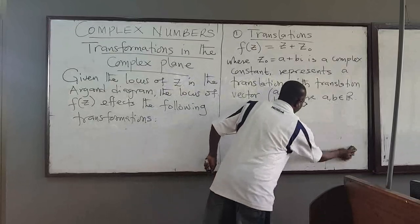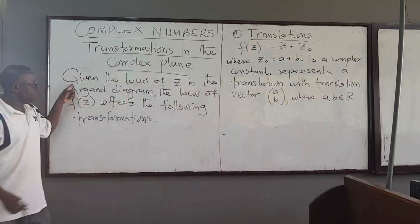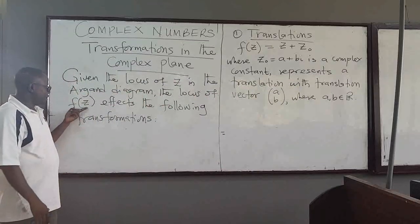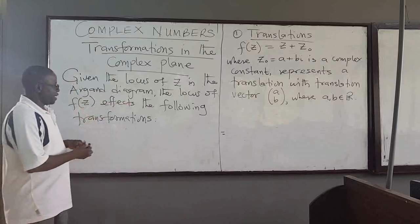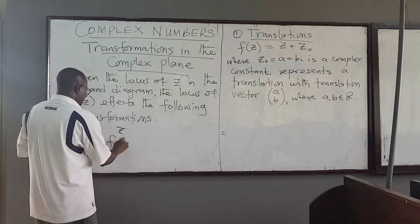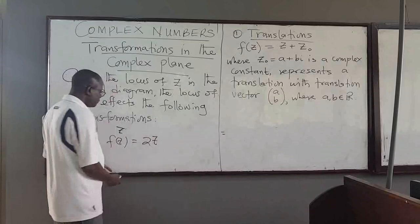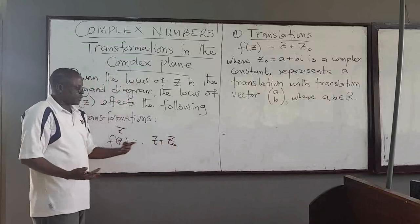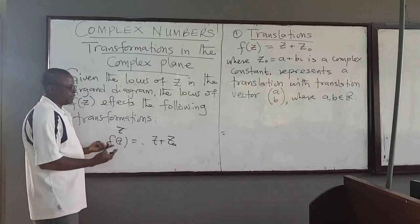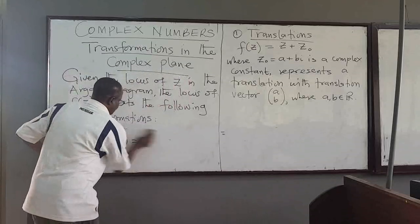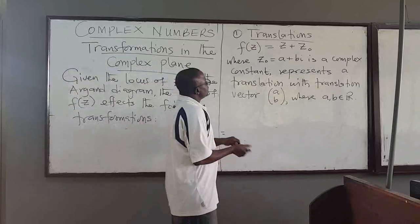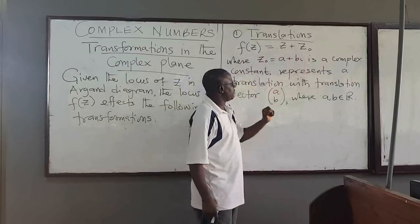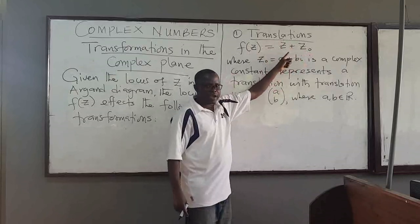We'll start with a simple case. Given the locus of z in the Argand diagram, the locus of some function — where this function can take any form — it effects the following transformation. If I have z and f(z) is equal to, for instance, z squared, or 2z, what does this transform into? If I have z and a function z equals z plus z₀ — adding a constant complex number to it — what happens to the original z? So in this case, we start with translations, which are much easier to grasp.